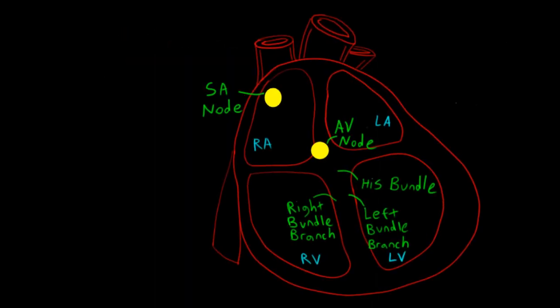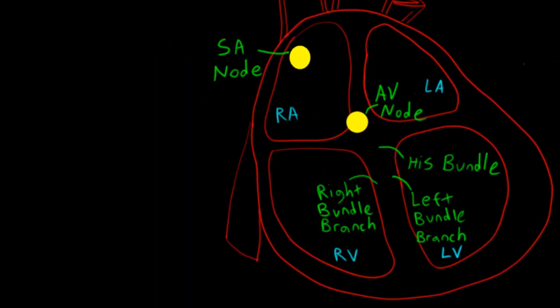The electrical activity of the heart starts at the sinoatrial node, or sinus node, which is located here in the right atrium. The impulse travels through the atria to cause atrial depolarization, which we see on our EKG as a P wave.